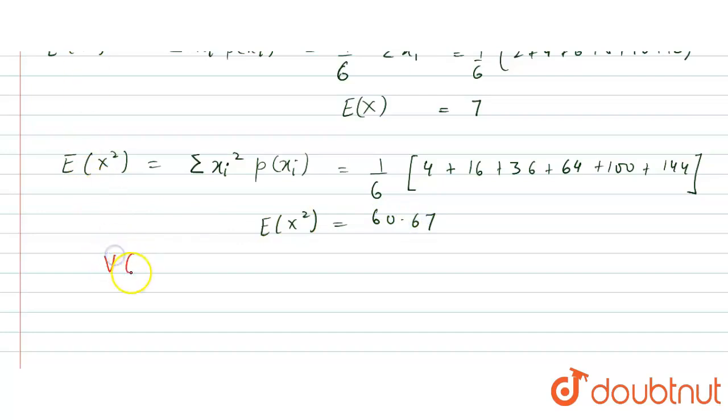Now, variance of x is expectation of x squared minus expectation of x whole square which is 60.67 minus 7 whole square which is 11.67. So, this is the variance of x, a random variable x.